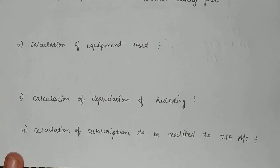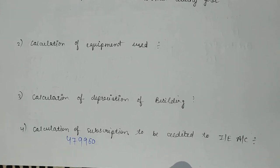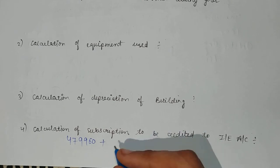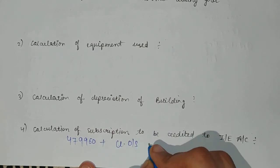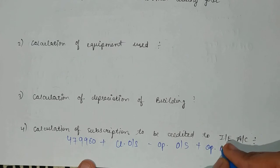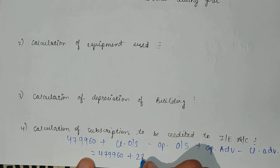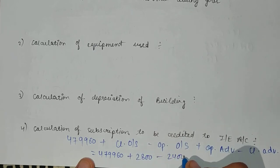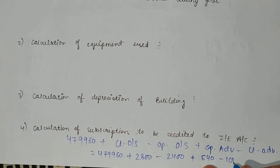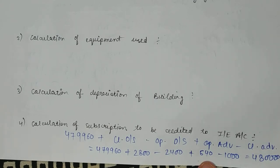First, for the subscription working note, the amount received is $479,960. Closing outstanding subscription is added, and opening outstanding subscription is deducted. Opening advance subscription received is added, and closing advance subscription is deducted. After solving, you will get $480,000 as the subscription amount, which we will credit to the income and expenditure account, as shown in the working note.